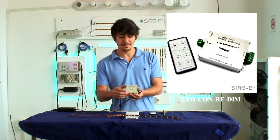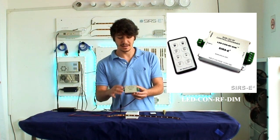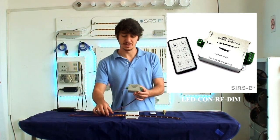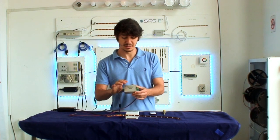This is the LED ConRF-DIMM. This controller is going to allow you to dim down your LED strips and your RGB LED modules.